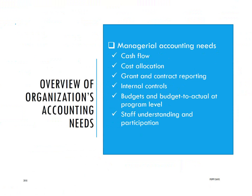Budget-to-actual documents at the program level are where most organizational managers are going to be operating. Program managers just need to see an accurate budget for their program and accurate year-to-date budget-to-actual reports. A system that delivers that to managers so they are not frustrated and are able to do their job is essential. As much as possible, staff should participate in the budget and budget-to-actual process — more junior staff can start to participate and understand why it's important to every aspect of the organization.